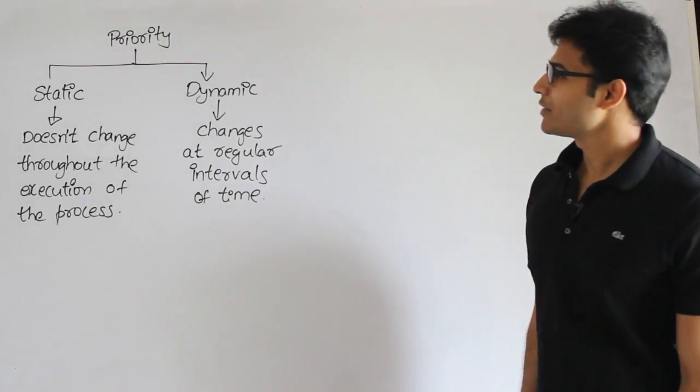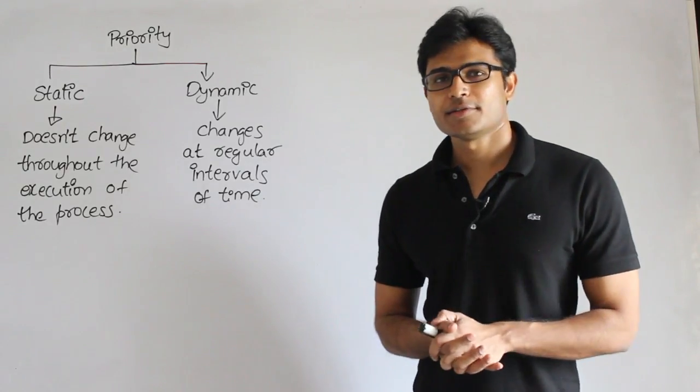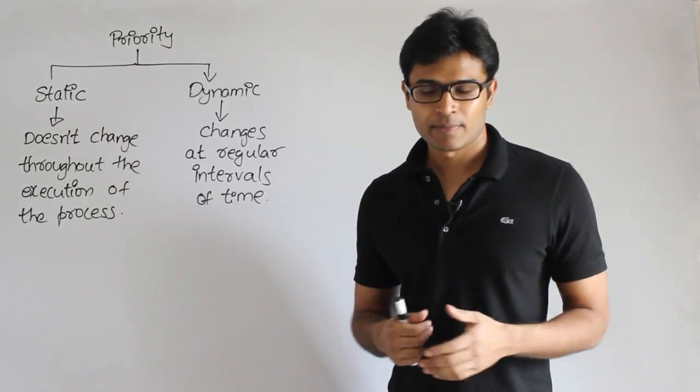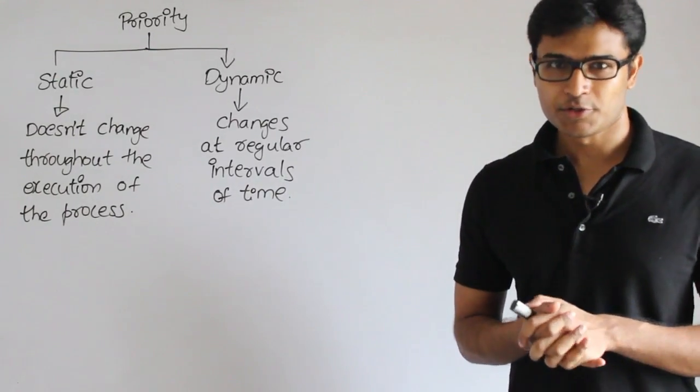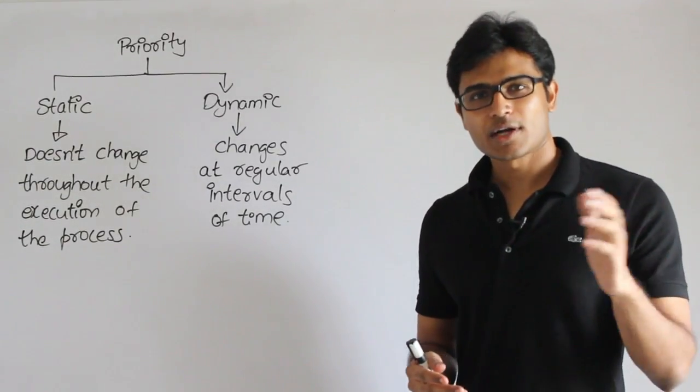Now let's see the priority algorithm. Here the processes will be assigned some priority when they are created. Till now we have not seen any such type. What happens is whenever a process is created by the scheduler, the long-term scheduler, when it enters the ready queue it is going to come with a number associated with it - that is nothing but the priority.